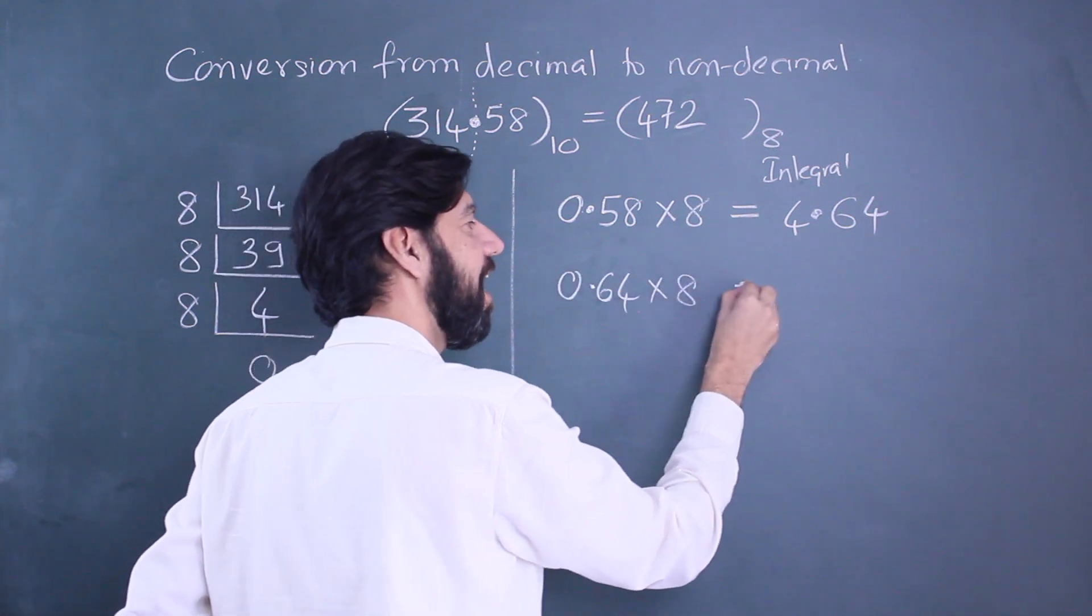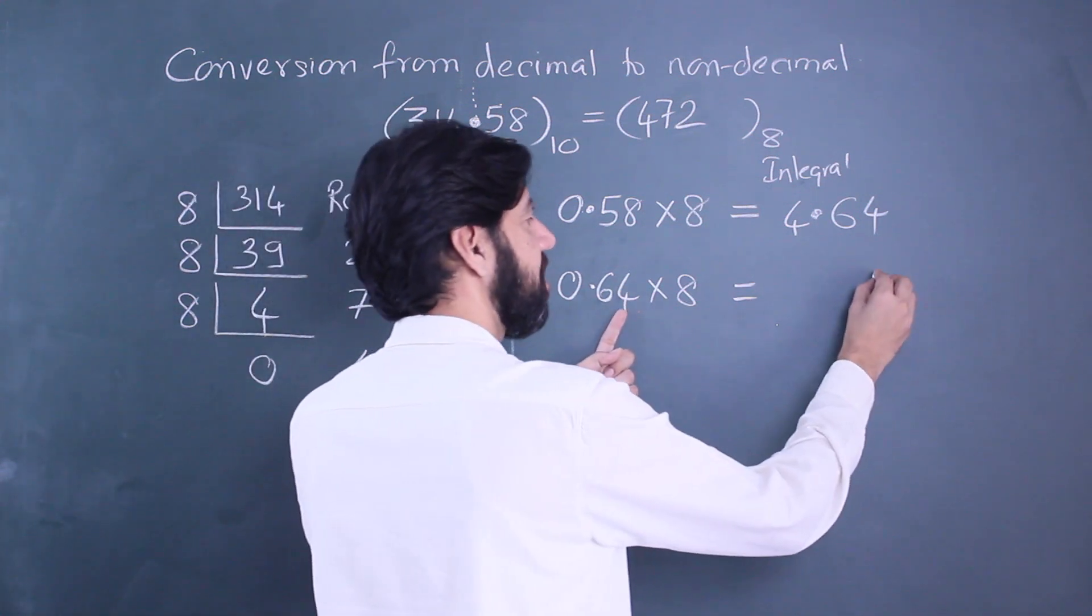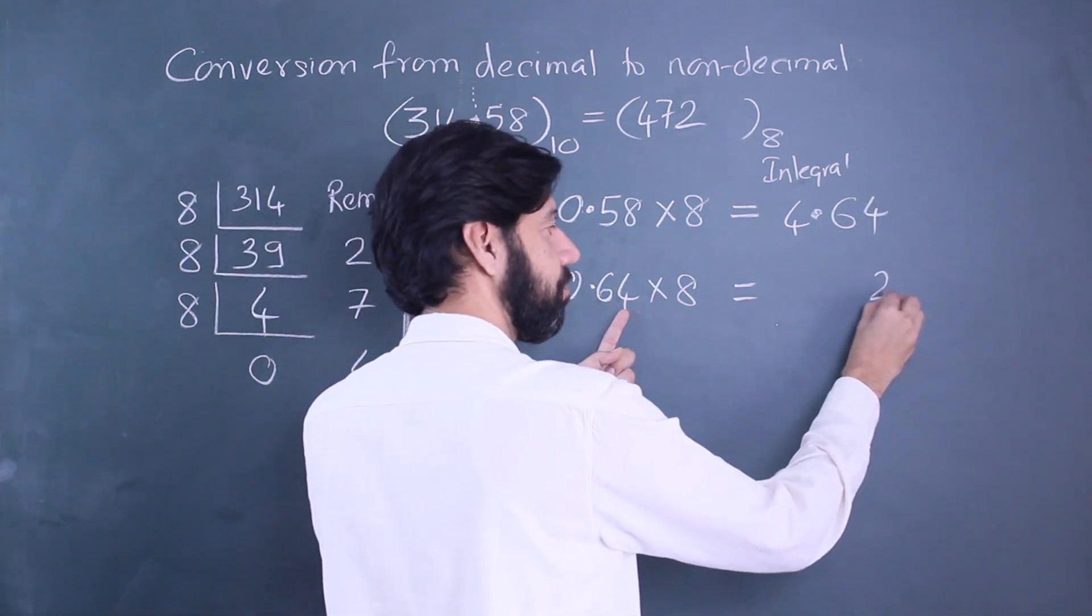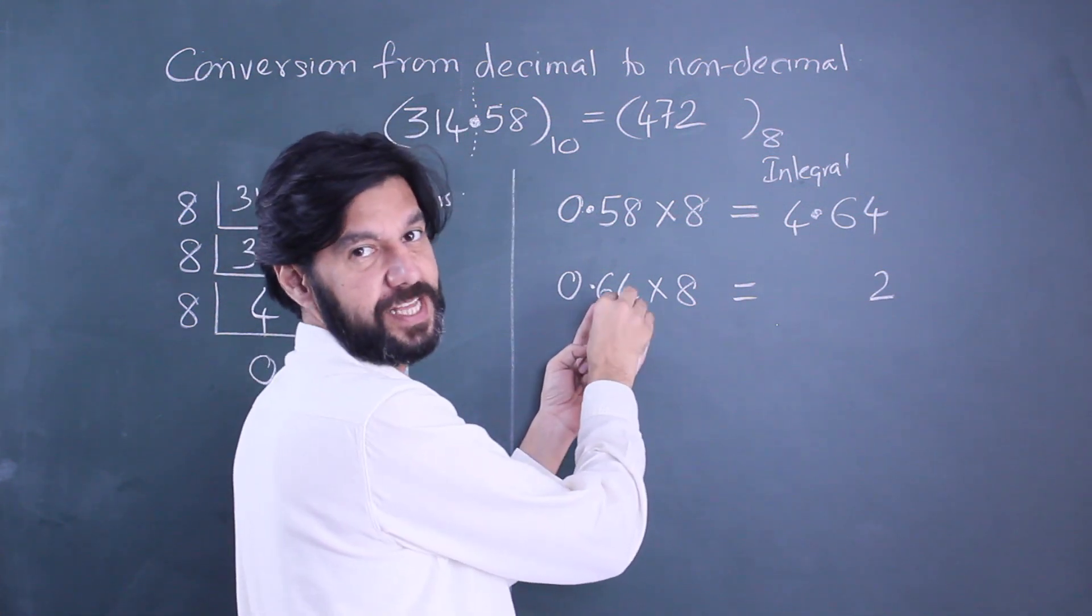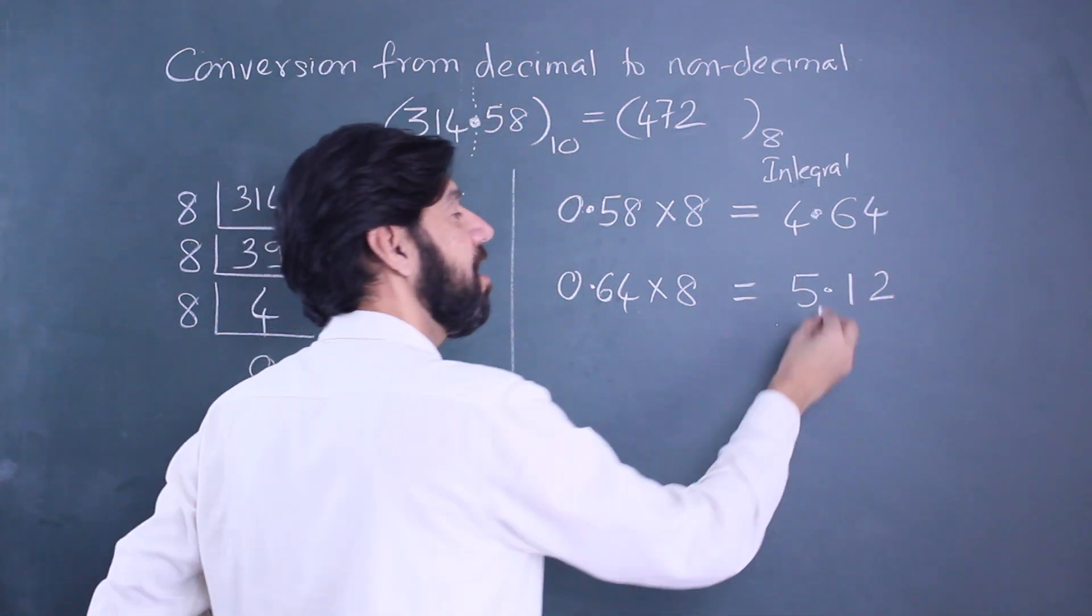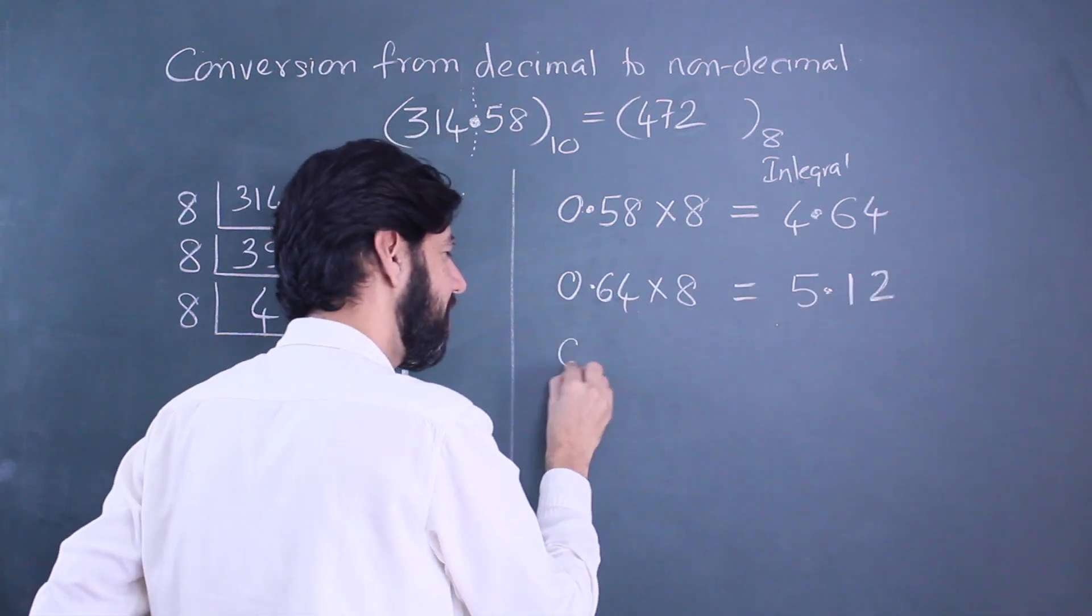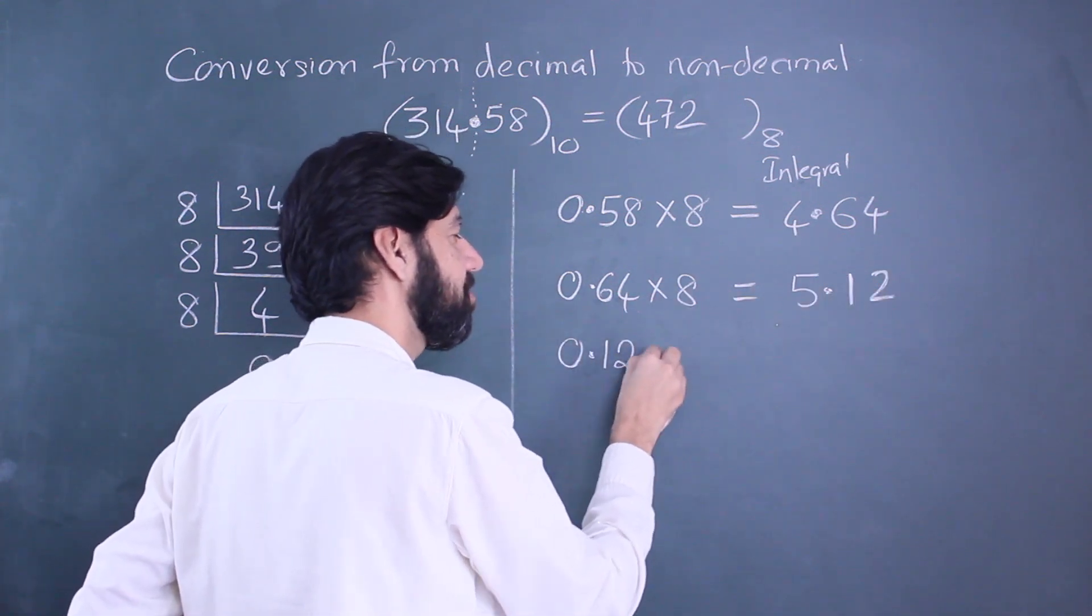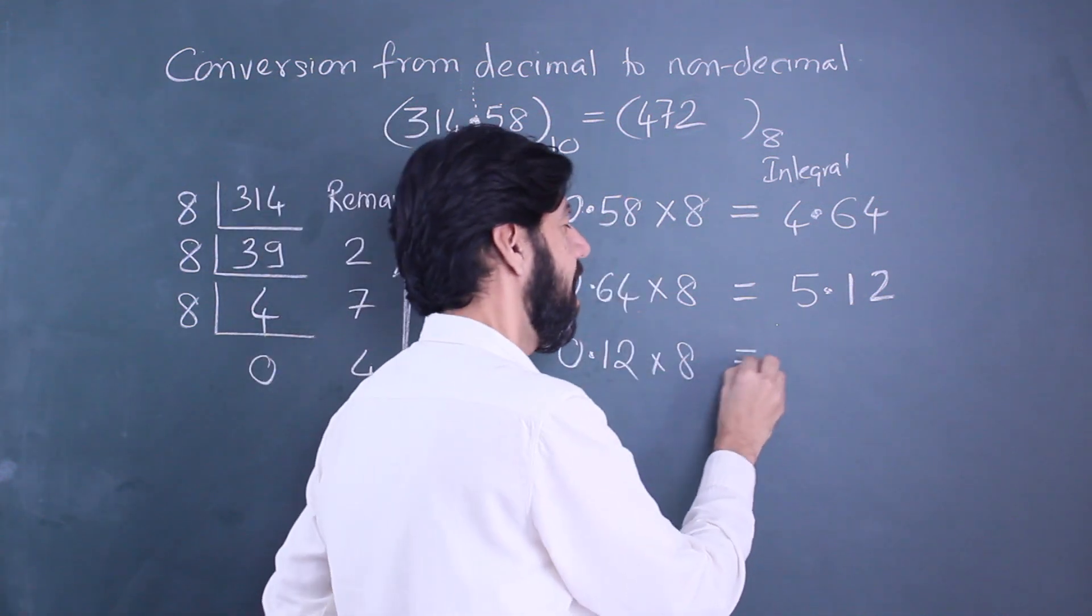Now leave the 4 aside, the integral part. Just focus on the decimal part, chuck the integral part, take only the decimal part and multiply it with 8 again. So 8 fours are 32, 3 carry over, 48, we get 5.12.